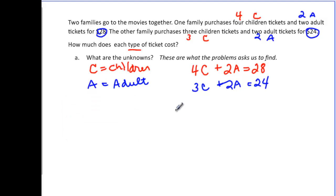So now we have a system here that we could easily solve by elimination. Because our A's have the same coefficient, we just need to multiply by a negative. So if I come through and multiply the bottom equation by a negative one, just because they're smaller numbers, then I'm going to have a new system of 4C plus 2A equal to 28. And my new equation is going to be negative 3C when I distribute, and negative 2A equal to, and don't forget to go all the way through, negative 24.